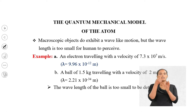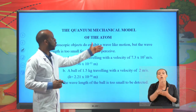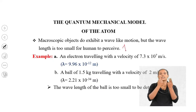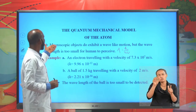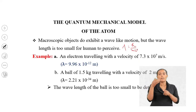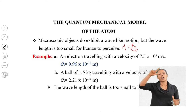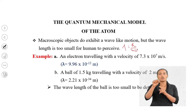The quantum mechanical model of the atom. Macroscopic objects or large objects do exhibit wave-like motion, because wavelength of a particle equals h / (mv). However, the wavelength is too small for large objects to perceive, because for large objects their mass is large, and wavelength is inversely proportional to mass — so it is too small for humans to perceive.